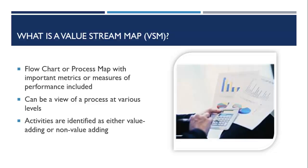A VSM can be a view of a process from 10,000 feet, 1,000 feet, 1 foot, or from inches. From whatever view selected, the next step is to identify all major activities as either value-adding or non-value-adding.